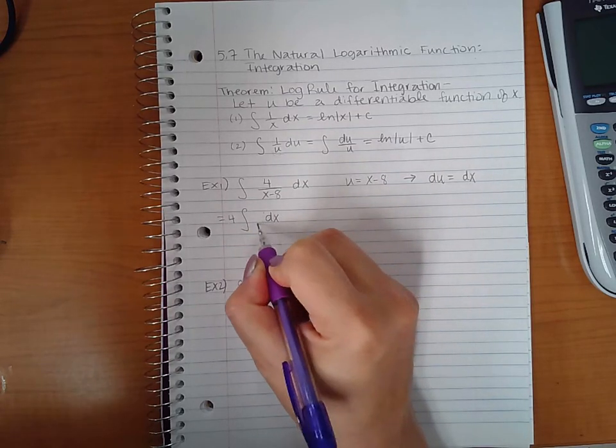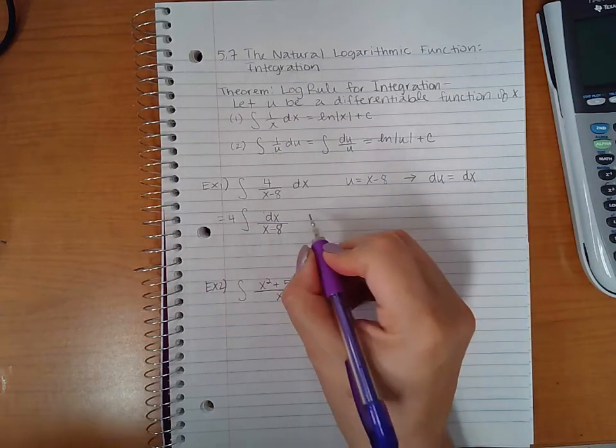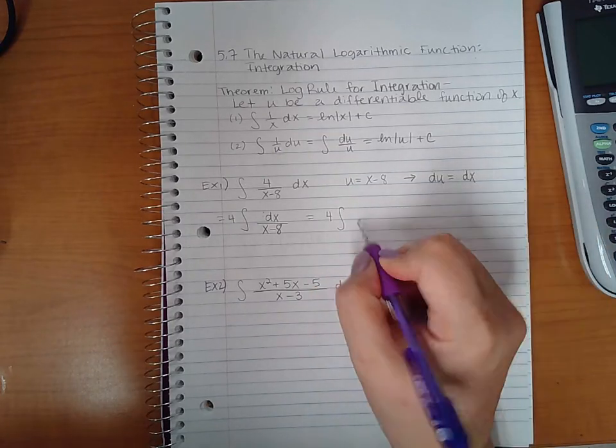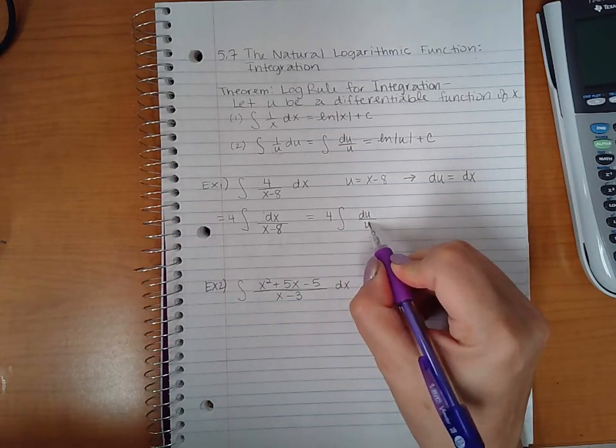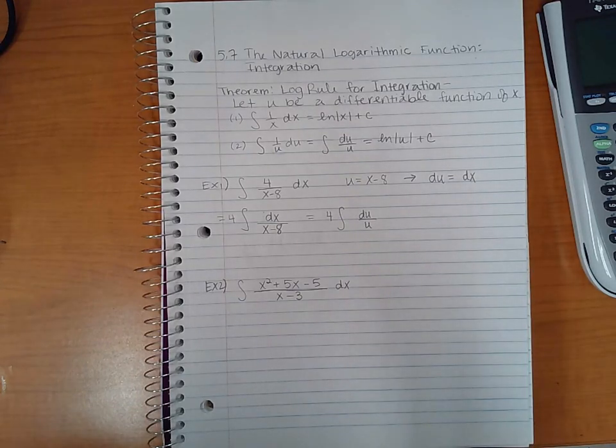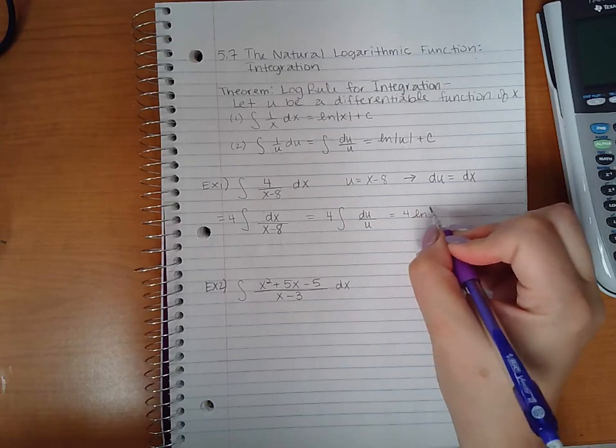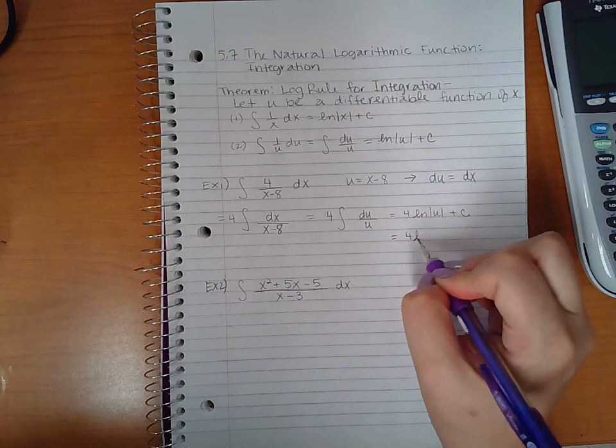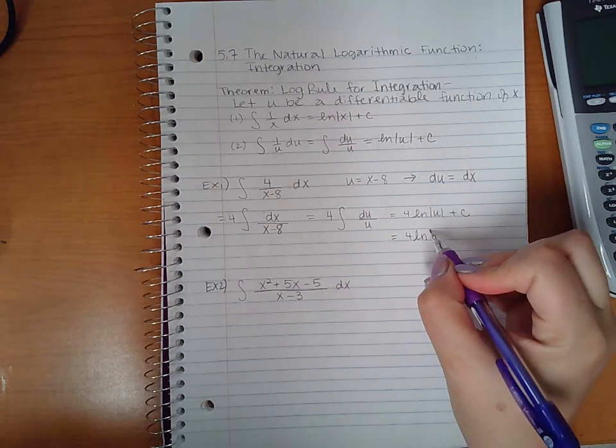Then put the dx in the numerator instead of 1 dx in the numerator. If I do the substitution, I have this 4 here, dx is nothing more than du, and x minus 8 is nothing more than u. We know that the rule says it's going to come out to be the ln of u plus c. Now we have to back substitute, what is u? u is x minus 8.